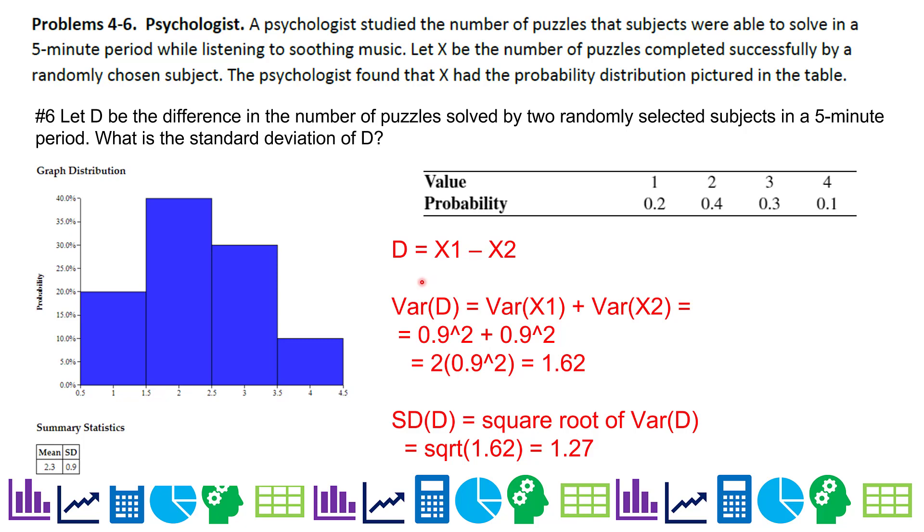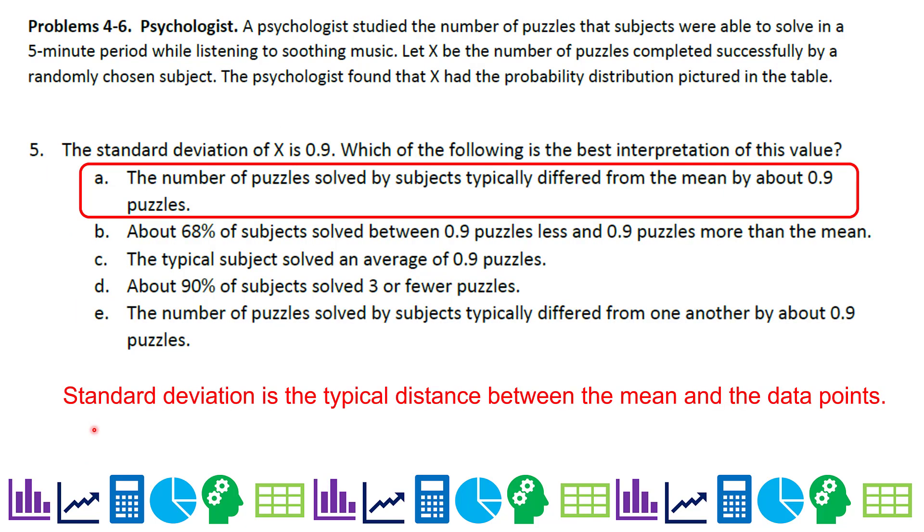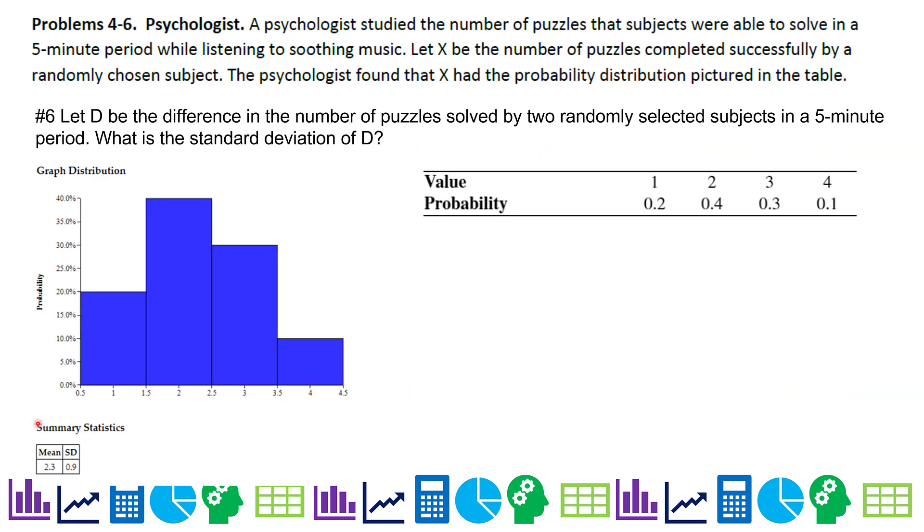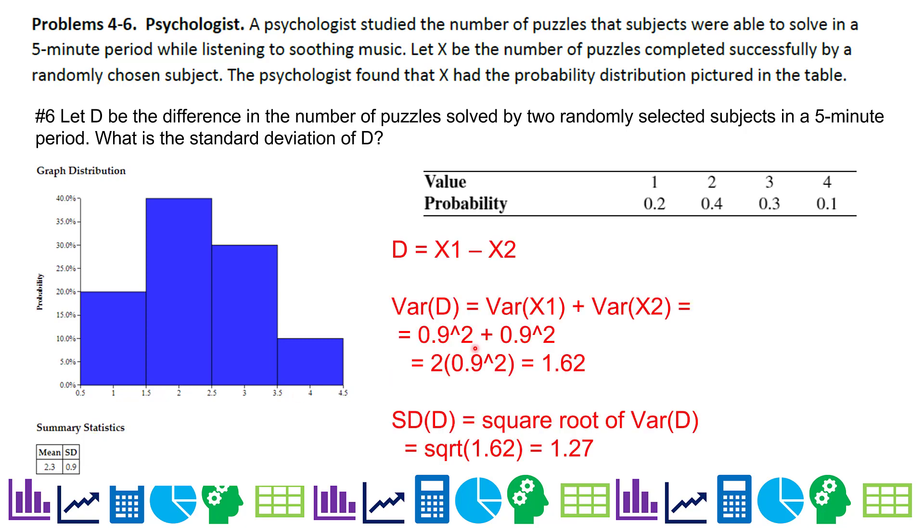0.9 is the standard deviation of the two. I have 0.9 as a standard deviation both times, so I'm going to square it to get variance, or I basically have two of them, and I get 1.62. But I need standard deviation, so I need to make sure I take the square root of that, and that gives me 1.27 is the correct answer.